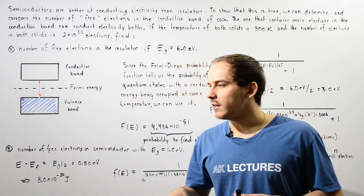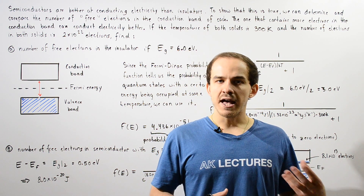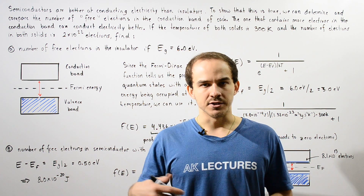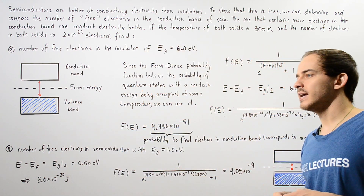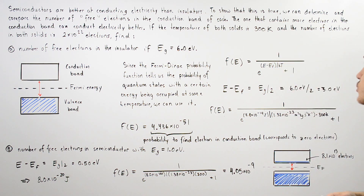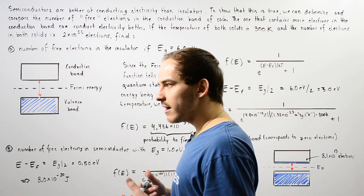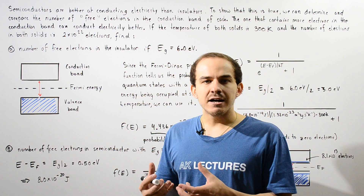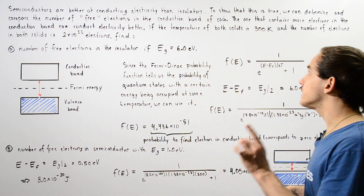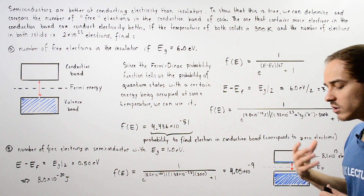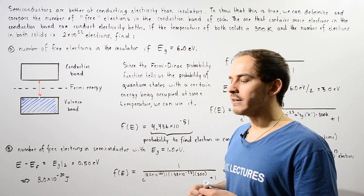Let's take a quick look at an example that deals with comparing the conductivities of semiconductors and insulators. Semiconductors are better at conducting electricity than insulators. To show that this is true, we can determine and compare the number of free electrons found in the conduction band of our semiconductor and our insulator. The one that contains more electrons in the conduction band is a better conductor of electricity.